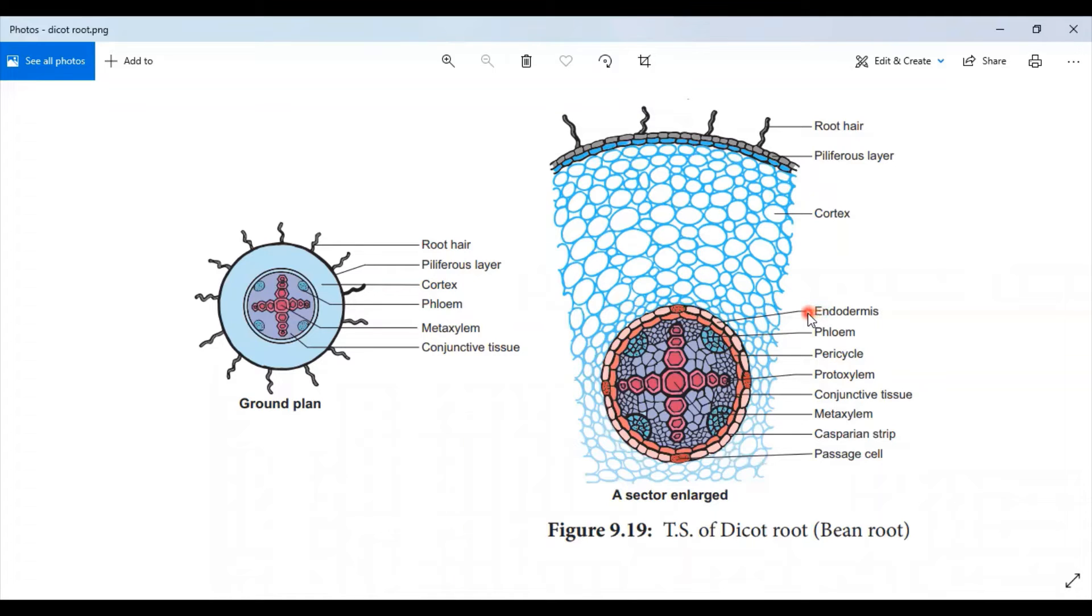Casparian thickening is the deposition of wall material, suberin and lignin. But these Casparian strips are absent in endodermal cells which are located opposite to the protoxylem limits. These cells are called passage cells through which water and mineral salts are conducted.